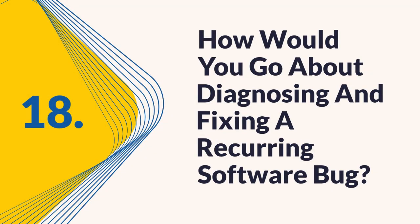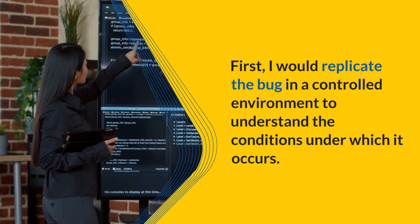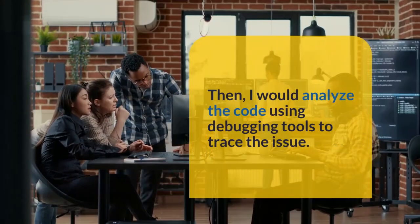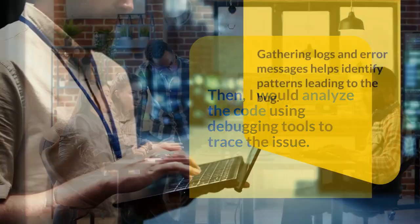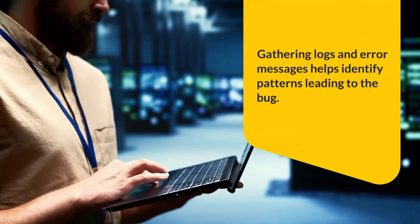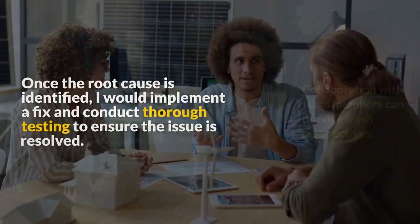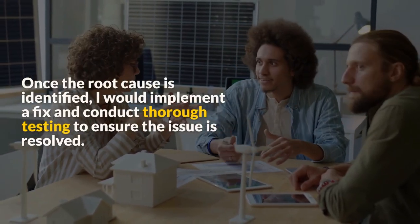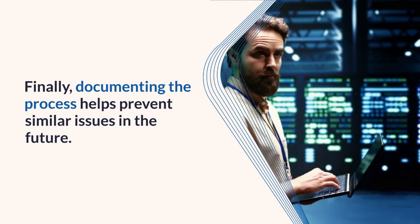Question 18: How would you go about diagnosing and fixing a recurring software bug? I would replicate the bug in a controlled environment to understand the conditions under which it occurs. Then I would analyze the code using debugging tools to trace the issue. Gathering logs and error messages helps identify patterns leading to the bug. Collaboration with team members can provide fresh perspectives. Once the root cause is identified, I would implement a fix and conduct thorough testing to ensure the issue is resolved. Finally, documenting the process helps prevent similar issues in the future.